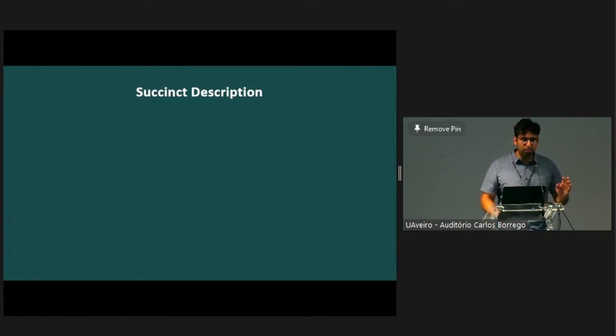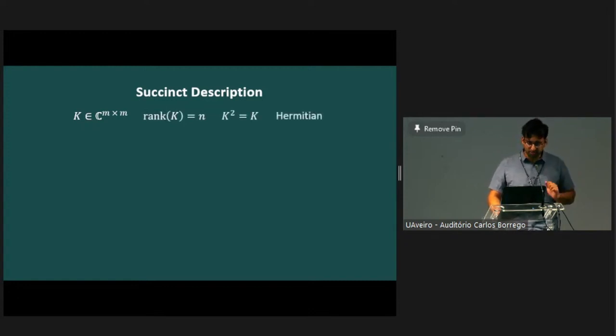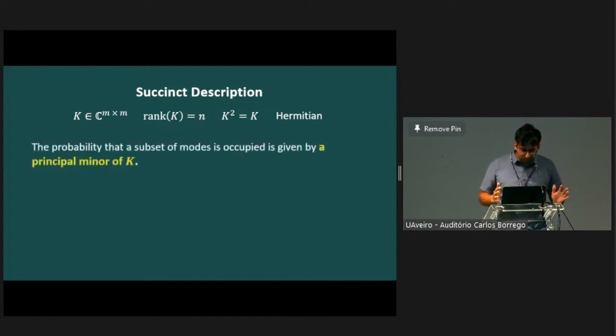One prerequisite you need that needs to be satisfied to give a time efficient learning algorithm is you need to have some succinct way to represent your state. It's been known for decades now that the fermionic systems we're studying here do have a succinct description. Specifically, if you have n fermions in m modes, you can describe it by a matrix which we denote by K. That's m by m, its rank is n, it squares to itself, and it's Hermitian. So this type of matrix describes a fermionic system, or at least the kind that we're studying here.